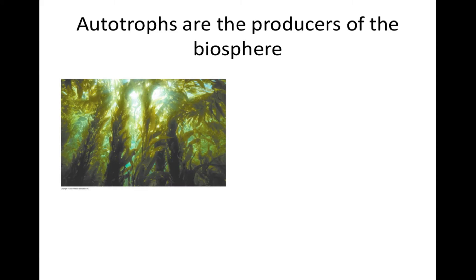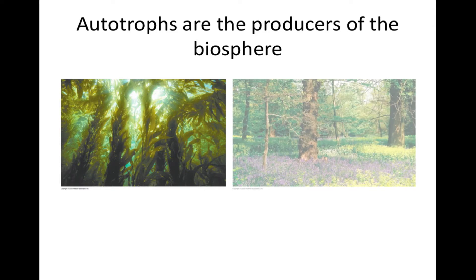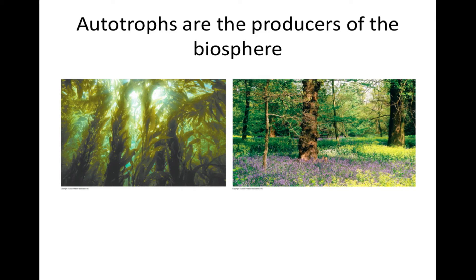Plants are autotrophs in that they make their own food and thus sustain themselves without consuming organic molecules derived from any other organisms. Plant cells capture light energy and convert it to chemical energy. Using this energy, plants make their own organic molecules and are the ultimate source of organic molecules for almost all other organisms. They are often referred to as the producers of the biosphere because they produce its food supply. All organisms that produce organic molecules from inorganic molecules using the energy of light are called photoautotrophs.